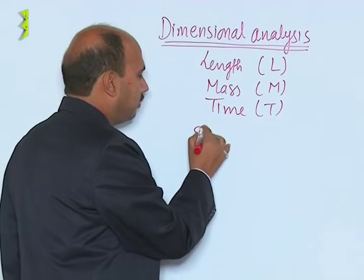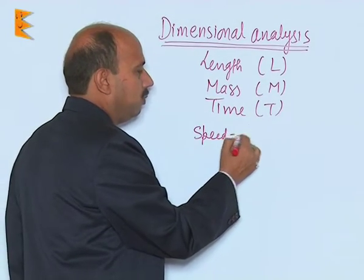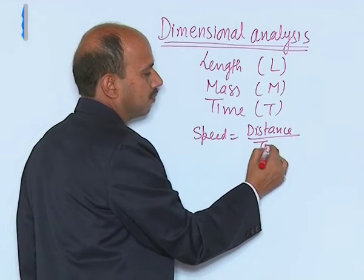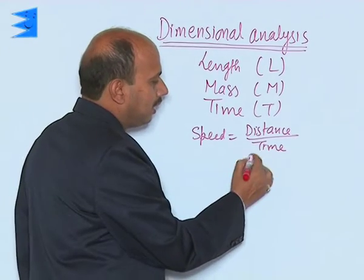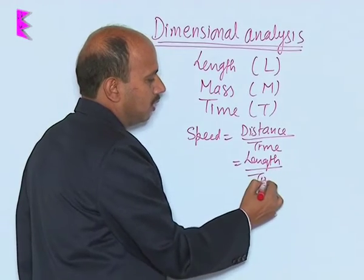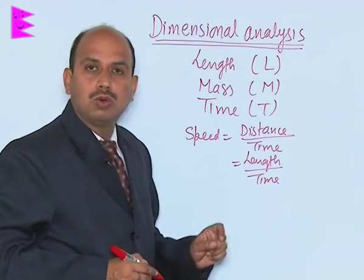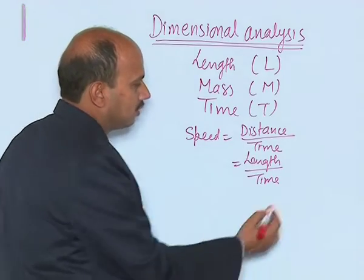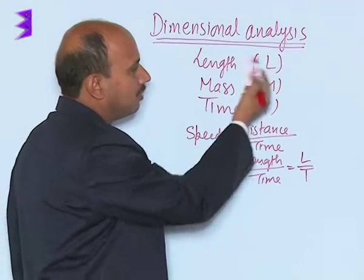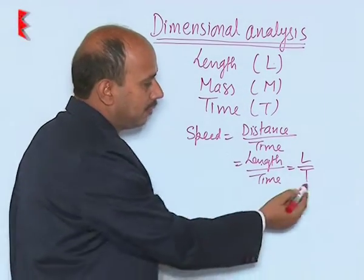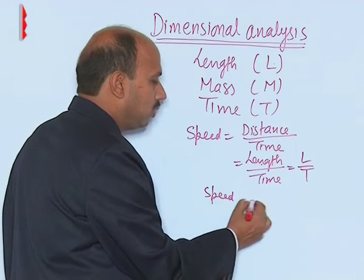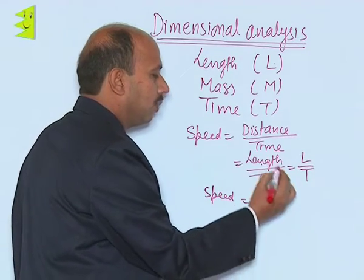Suppose you are writing speed. Speed is equal to distance upon time, which can be written as length upon time. Length and time are two fundamental quantities, so we can write L upon T. Speed is equal to L and T raised to power minus 1.